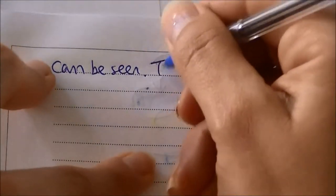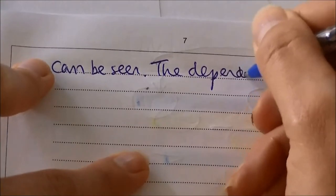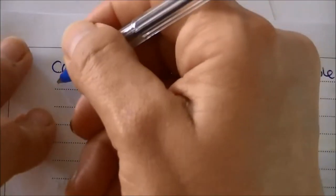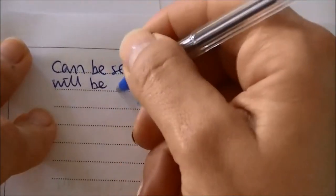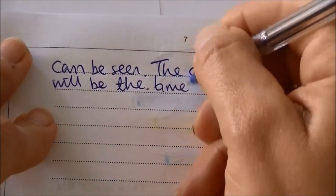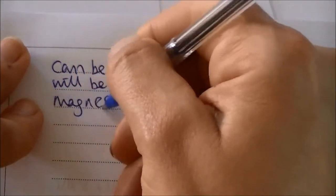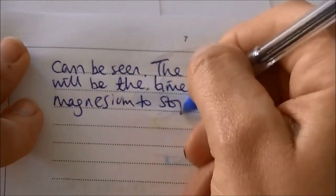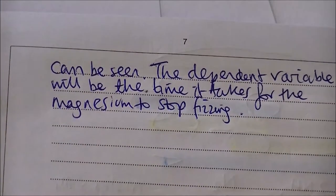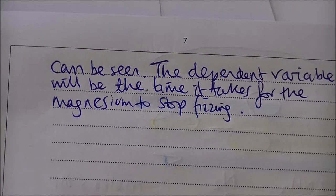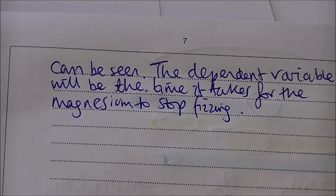What about specialist words? Could we include something about our dependent variable? The dependent variable is the one we're going to measure — what we would write down in our results table. The dependent variable will be the time it takes for the magnesium to stop fizzing. We haven't just said measure how long the reaction takes — we've actually said exactly what we're going to do.